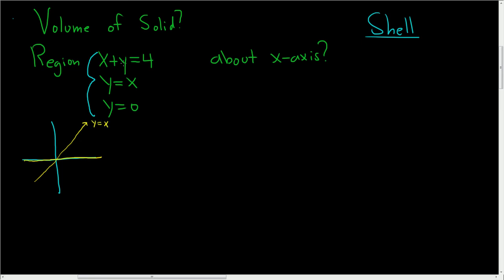And then this line here, if we like, we can solve this for y by subtracting x. So y is equal to 4 minus x. So if we plug in 4 here, we're going to get 0. So this is 4.